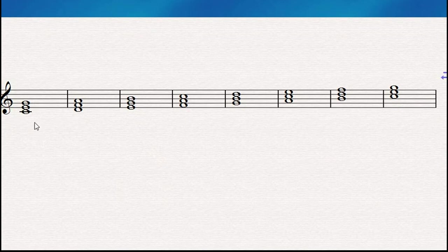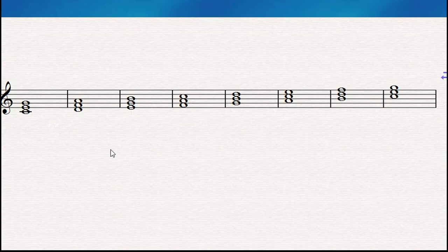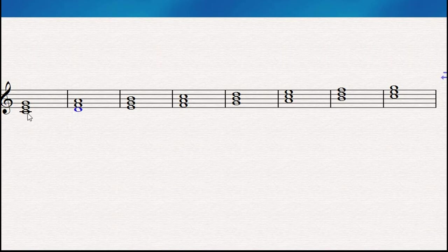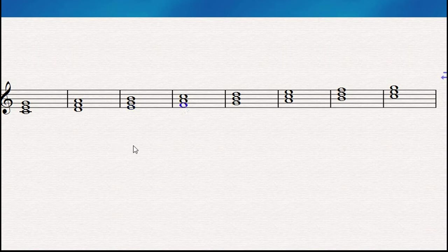Let's listen to the sound that every single chord makes. Apparently every single chord should sound the same — let's see if that's true. That sounds like a major chord. That actually sounds like a minor chord. This is a minor chord again — just listen to the difference. This one sounds like a major chord and this one like a major chord again, then a minor chord.